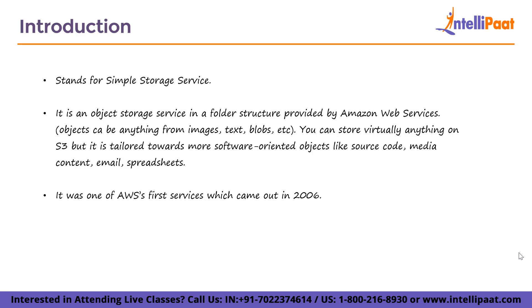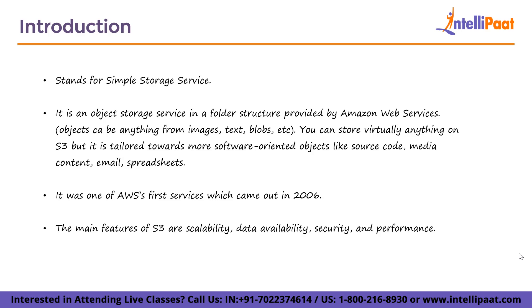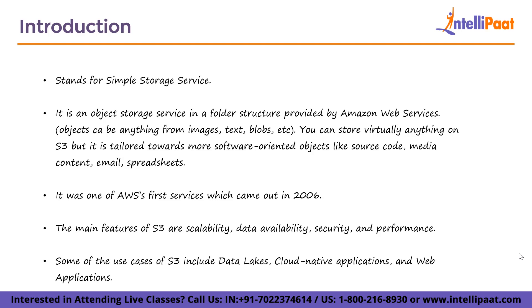Amazon S3 was one of AWS's first services, which came out in 2006. The main features of S3 are scalability, data availability, security, and performance. If your requirements require you to store more data on the go, you will get scalability options from the S3 service. Your data availability is also guaranteed, along with security and performance. Some use cases of S3 include data lakes, cloud-native applications, and web applications.